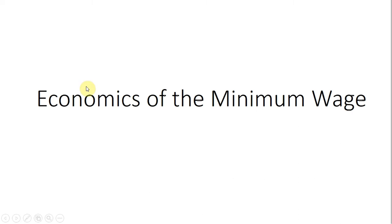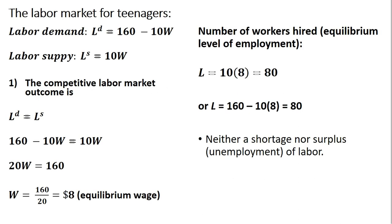In this video we're going to look at the economics of the minimum wage. We're going to start with the labor market for teenagers. The labor demand is given by LD: quantity of labor demanded equals 160 minus 10W, where W is the hourly wage rate. Labor supply: quantity of labor supplied equals 10 times the hourly wage rate. We'll start with the competitive labor market and then look at the effects of the minimum wage.